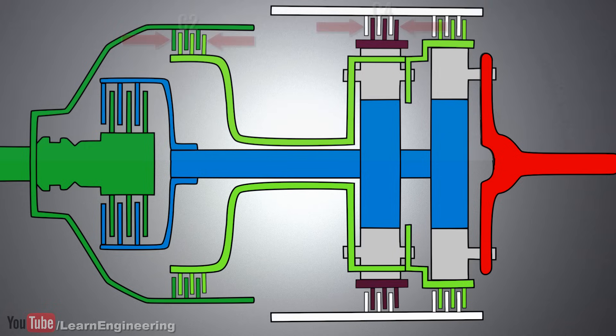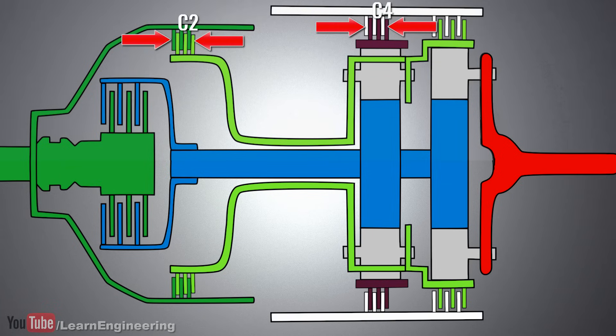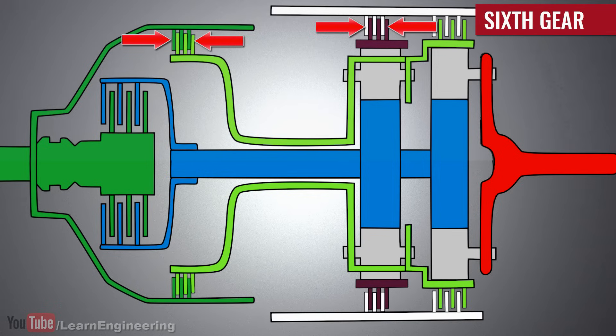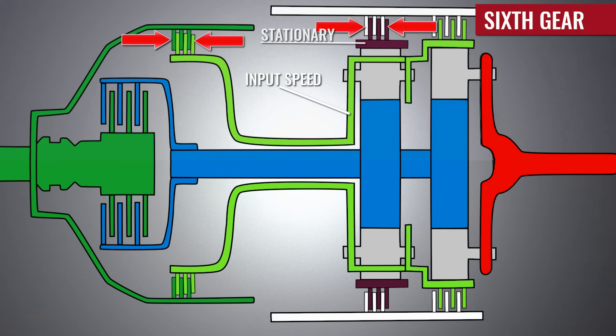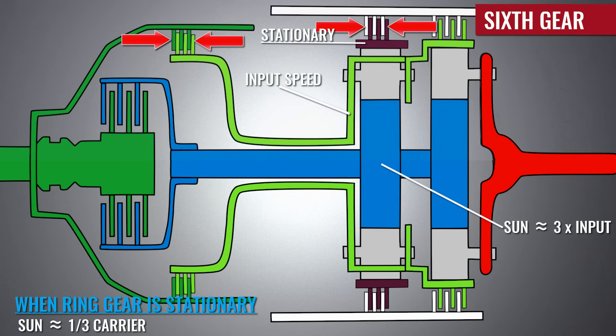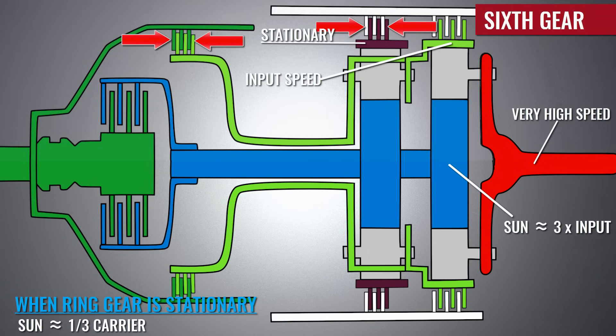In the very same mechanism, if you apply C2 and C4, you will get very high speed at the output. Think for a moment and try to understand this. It is clear that the carrier of the second set will turn at the input speed. However, here the ring gear is stationary. This makes the sun gear turn at almost three times the speed of the input. Eventually, a very high output speed is obtained.